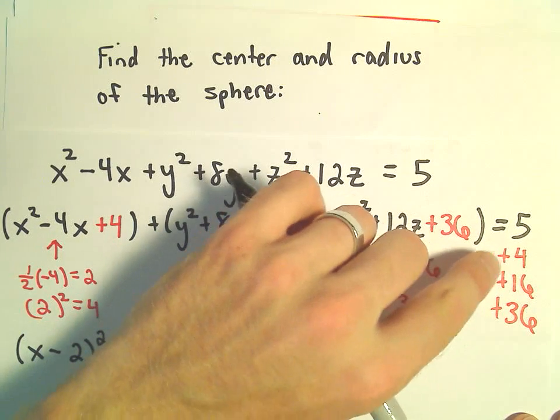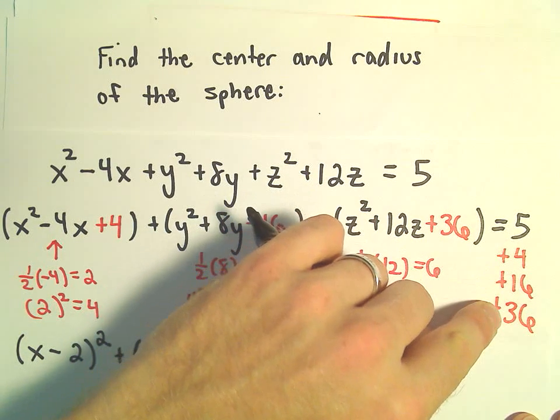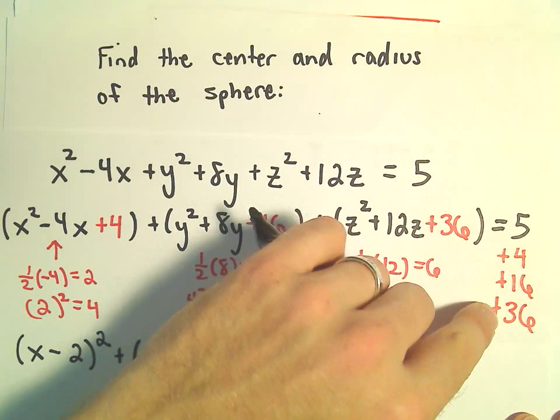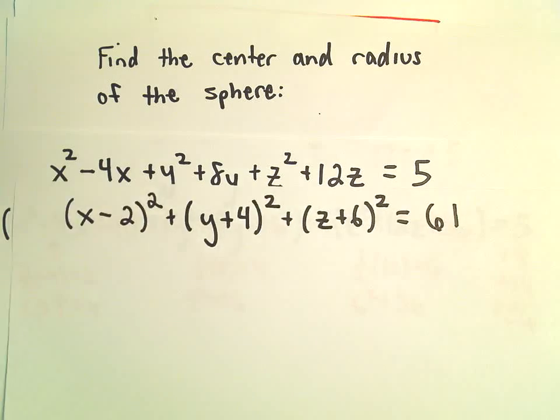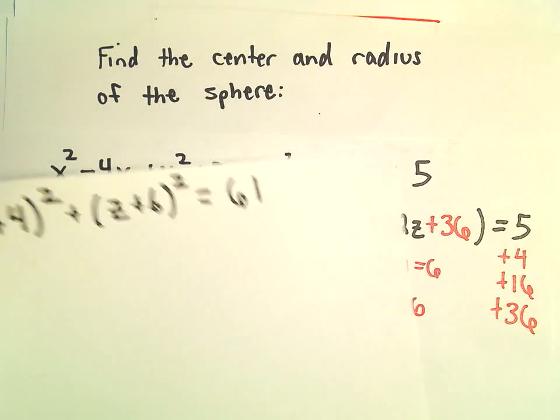On the right side, if we add everything up, let's see, I guess we've got 20 and 36, that's 56. 56 and 5 would be 61. And now we've put it in this nice little form that we wanted.